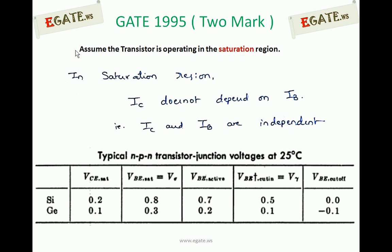We can use standard values whenever the transistor is in saturation or active region. These are typical NPN transistor junction voltages at room temperature. If temperature is not specified, we assume room temperature. The key parameters are: VCE saturation, VBE saturation, VBE active, VBE cut-in, and VBE cut-off.